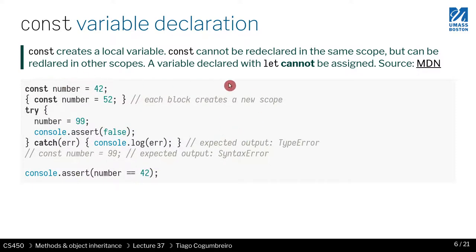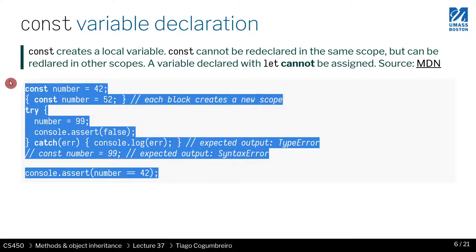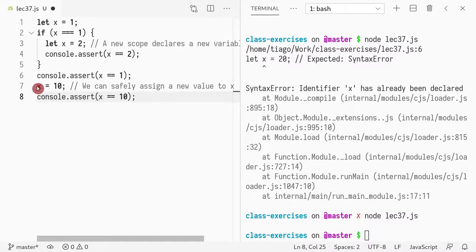There's another thing that you might see, which is a const. A const works exactly like a define in Racket, in the sense that you cannot redefine it, and you cannot assign anything to it. So let me copy-paste this. So you cannot do this with a const. That's the only difference. It works like a let, except you cannot mutate the variable.